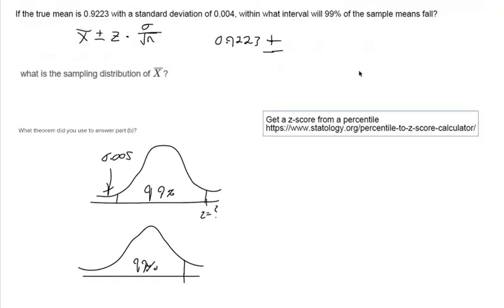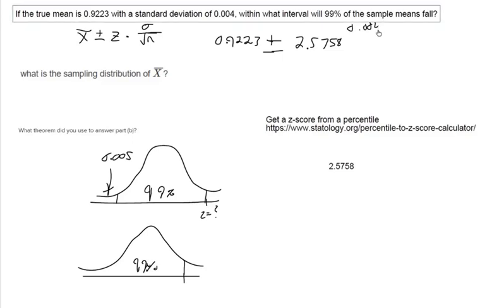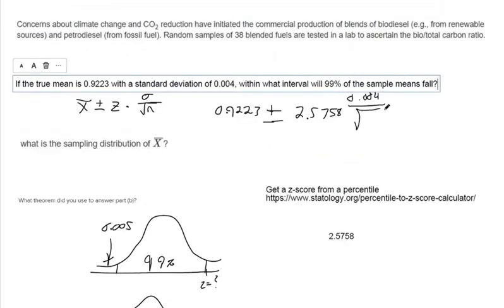So I've got my Z-score. I forgot what it is already, but I copied and pasted it to my clipboard. So that's what I'm going to plug in for Z in that formula I've given up here. We plugged in the mean. We're going to plug in the Z-score. We've got a standard deviation of 0.004. And then we're going to divide by the square root of the sample size, the square root of 38. And there we go. Once we make that calculation, that will be the interval that they're looking for.